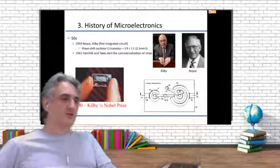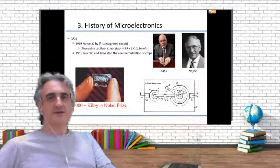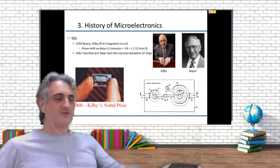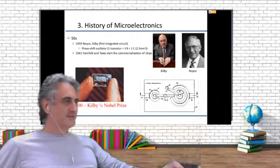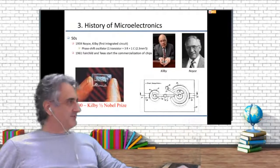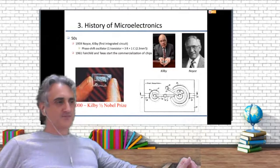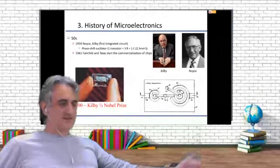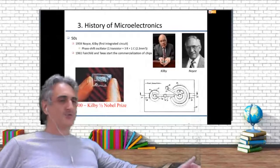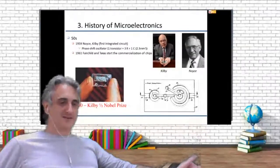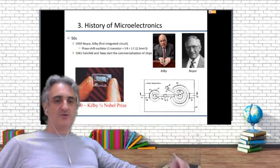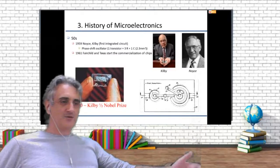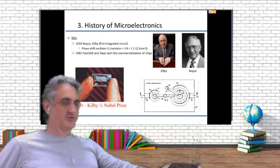You don't need only the transistors — you need to interconnect them, you need cables, you need to power them, and you need some substrate to put them on. So by the 1950s they had a problem called the tyranny of numbers: they knew how to design very complex circuits, but they didn't know how to fabricate them, because the integration, the cables, the physical substrate, and the power were very big problems.